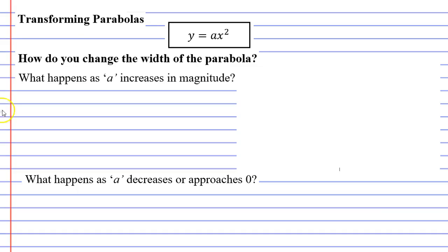So I'm going to go back to my slide and I'm going to write a little note to myself. Remembering that a is the number in front of x squared. So as this value increases in magnitude, as a increases in magnitude, we notice that the parabola becomes thinner.